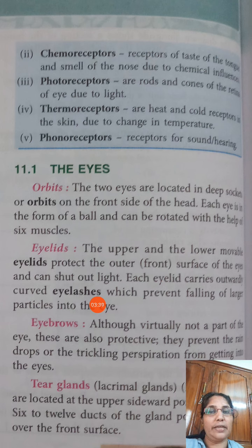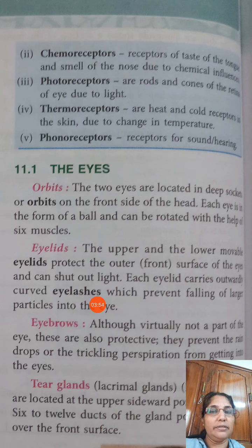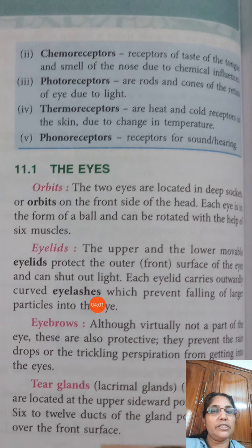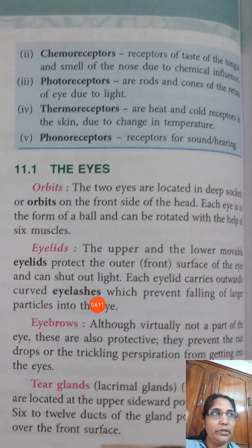We can see small sockets — hollow regions in the front of our skull — which are known as the orbit, in which the eyes are protected. Each eye is in the form of a ball and can be rotated with the help of six muscles. There are six muscles for each eye to rotate it in different directions.